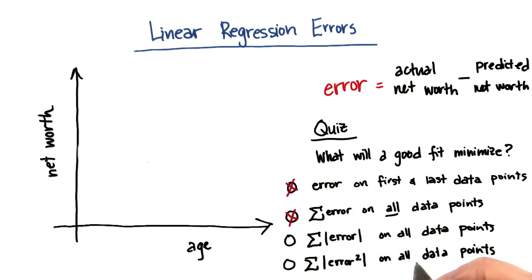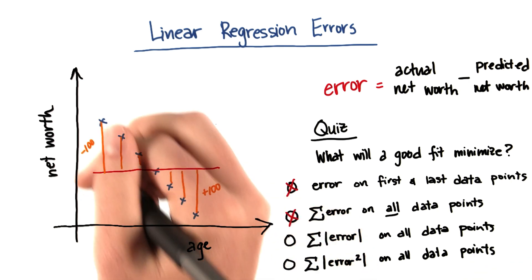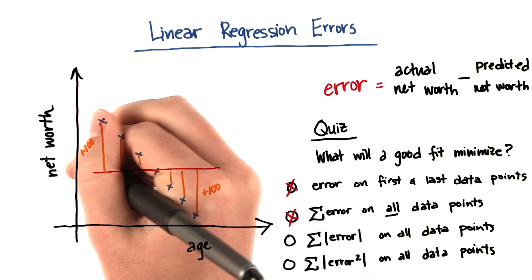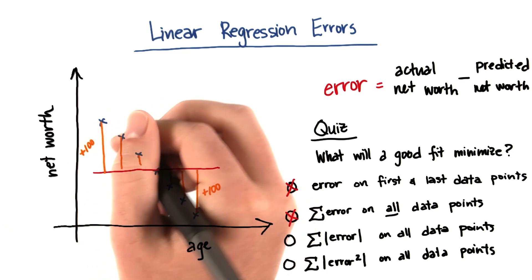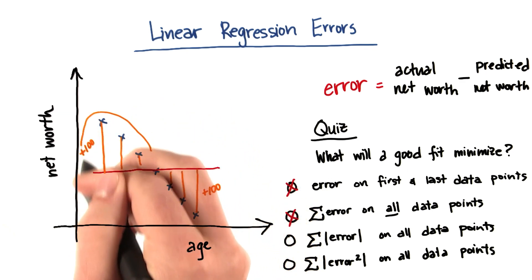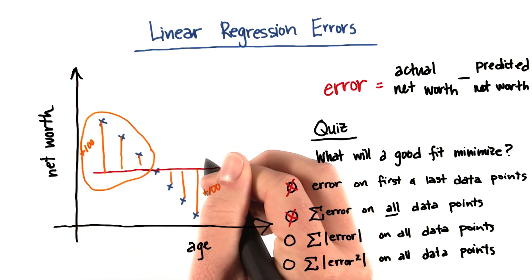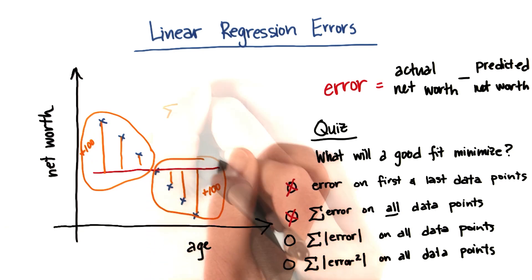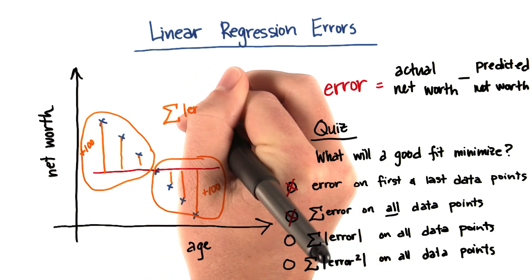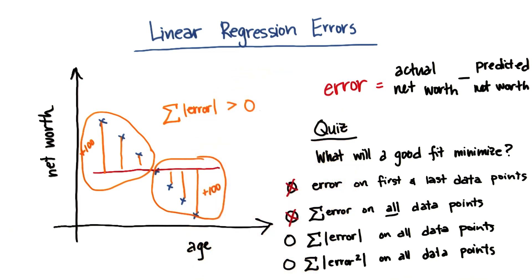Two things that will work a little bit better will be the sum of the absolute value of the error. So in this case, what would happen is we would turn all of these into positive errors, these three points right here, and then these were already positive. So altogether, the sums of the absolute values of the errors will be quite large. So that would probably work.